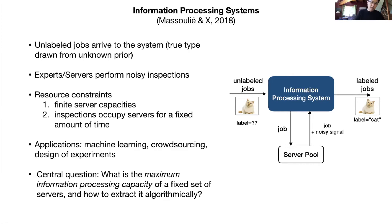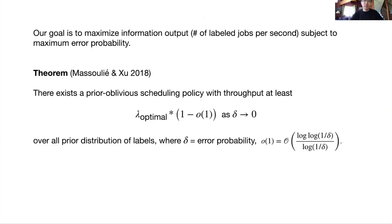Imagine there's a stream of unlabeled jobs arriving to the system. For now, you can imagine this is a stream of photos with the labels unknown. We're going to employ a class of finite set of experts and servers to perform noisy inspections. Each expert might get a picture, and then in return it will attach a noisy signal to the picture that has to do with the label at hand. The resource constraints in the system are captured by the fact that number one, there are only a finite number of servers. And number two, each inspection will occupy that particular server for a fixed amount of time. The application for such systems typically from machine learning where you might have a fixed number of servers in the server farm, crowdsourcing where you might have fixed number of experts, or design experiments where there's some capacity on the machine that will perform such experiments.